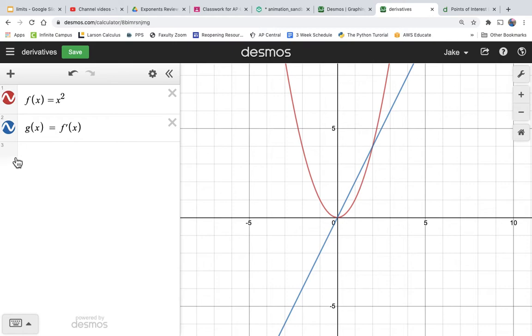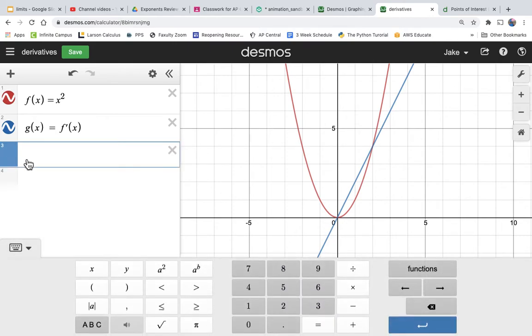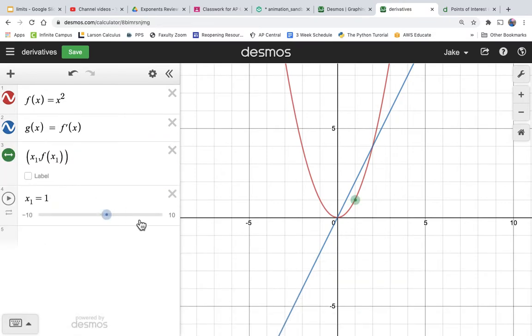And it'll be helpful to have a point when we're exploring this. So let's just add a point. Let's say parentheses, x sub 1 comma, and that's the x, and then we'll make the y f of x sub 1, and then close our parentheses. So we've got our point, and it's asking us if we want to add a slider. Let's add a slider. Let's just make it red so it's clear that that point is on that red graph.